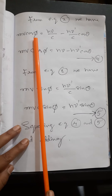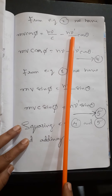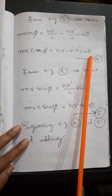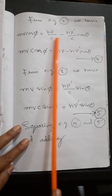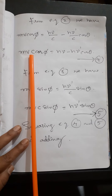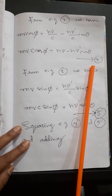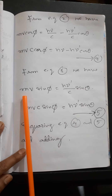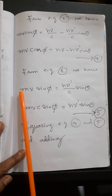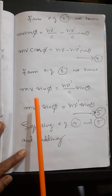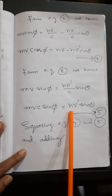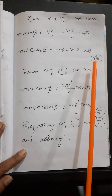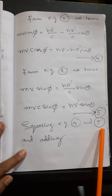From Equation 2, simplifying: mv·cosφ = (h/c)(nu − nu'·cosθ). Let this be Equation 4. From Equation 3, simplifying: mv·sinφ = (h/c)(nu'·sinθ). Let this be Equation 5.